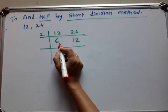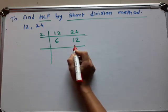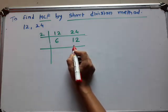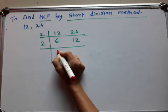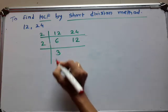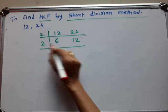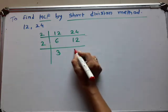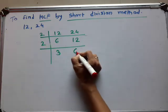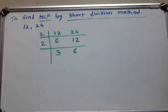Then 6 and 12 — again, both are even numbers. So again these numbers are divided by 2. 2 times 3 are 6, and 2 times 6 are 12.